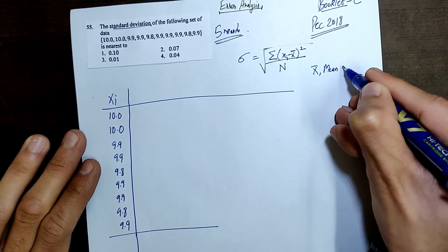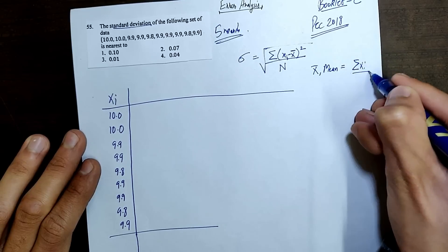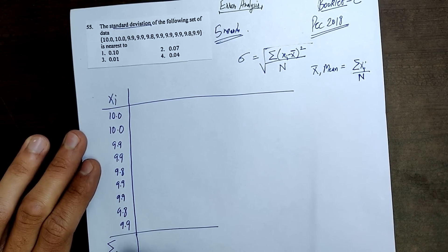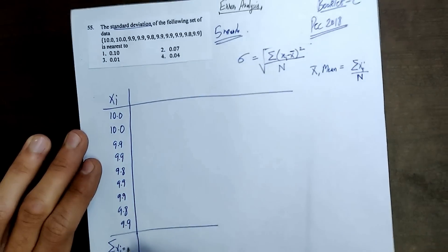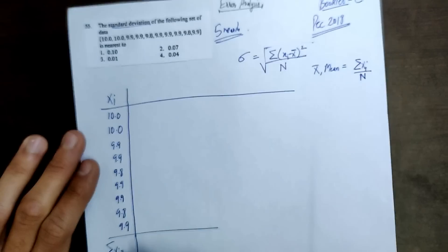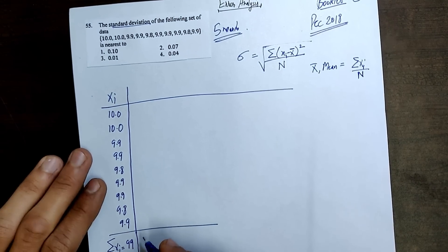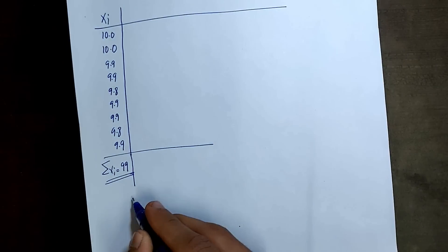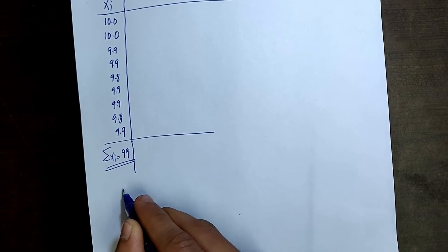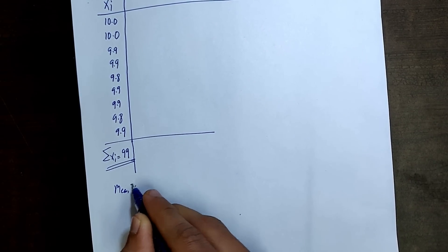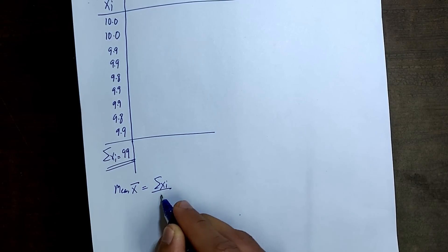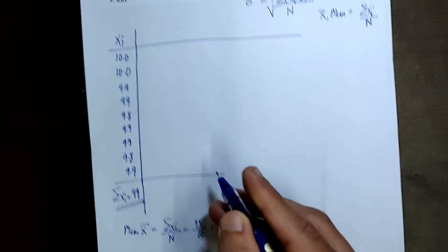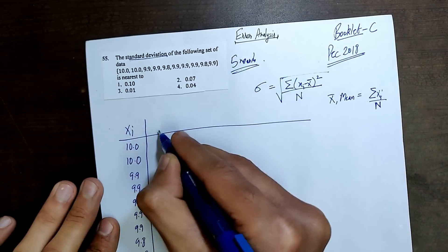The mean is equal to Sigma XI divided by n, where n is the total number of terms. The sum Sigma XI of all these terms comes out to be 99. So the mean X-bar equals 99 divided by 10, which gives us 9.9.